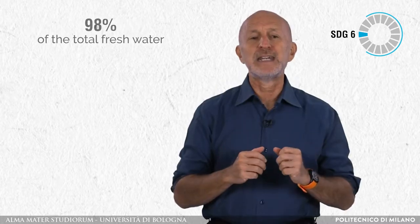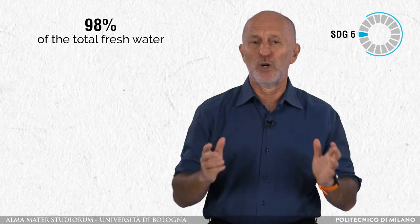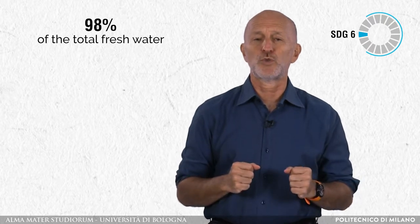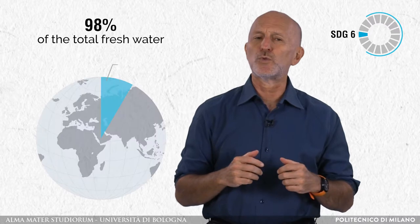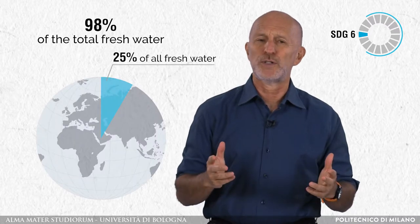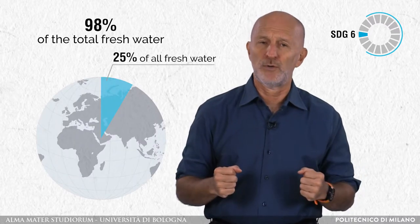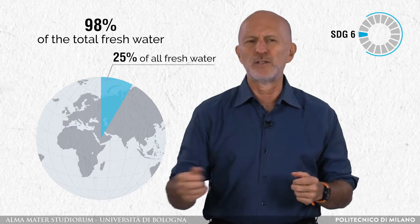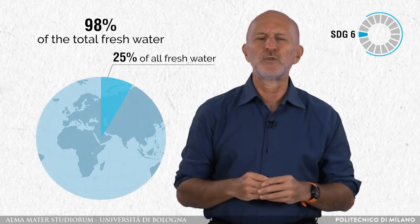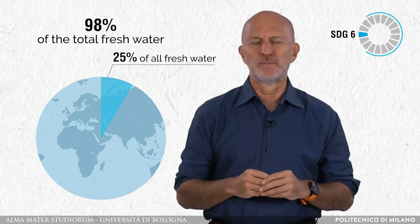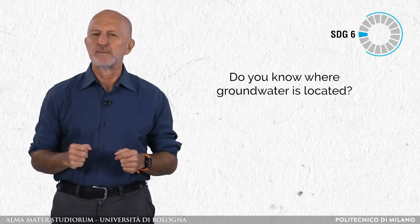Groundwater attains 98% of the total volume of liquid freshwater of the hydrosphere and almost 25% of all freshwater on planet Earth, the remainder portion pertaining almost exclusively to ice sheets and glaciers.